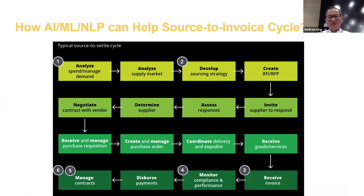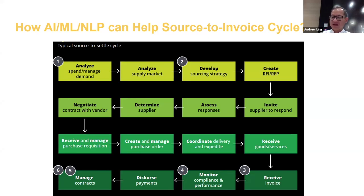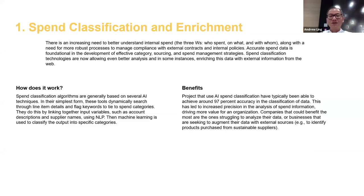There are a few areas where I believe AI, machine learning, and NLP — natural language processing — can help. Those areas are: first, spending analysis; second, sourcing insight; third, invoicing; and fourth, fifth, and sixth is contract management. We're going to go through them one by one.